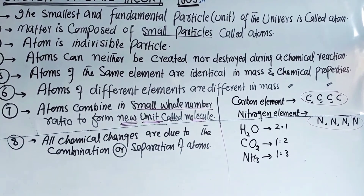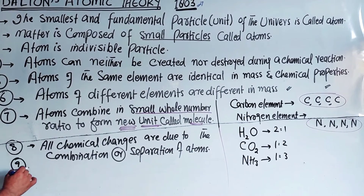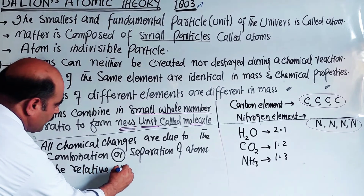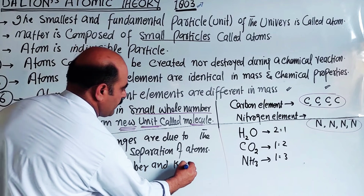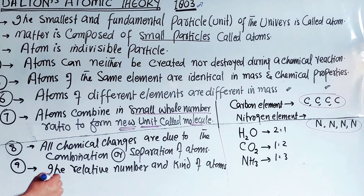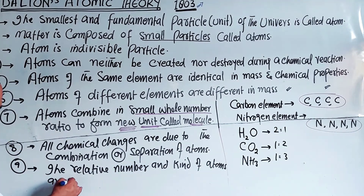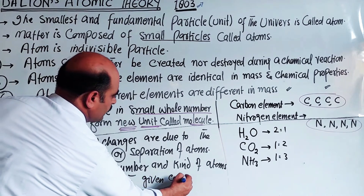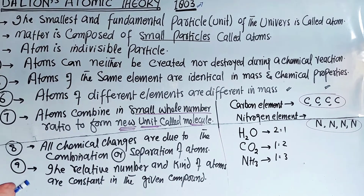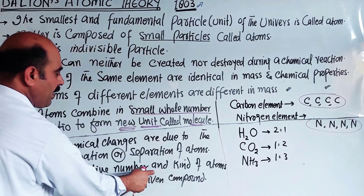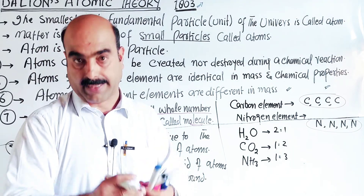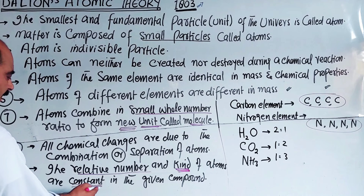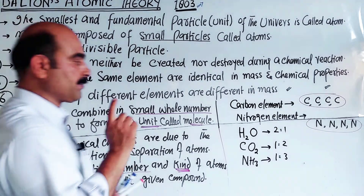Point Number Nine: The relative number and kind of atoms are constant in a given compound. The relative number of atoms — compared to other elements' atoms — and the kind of atoms do not change in a given compound.